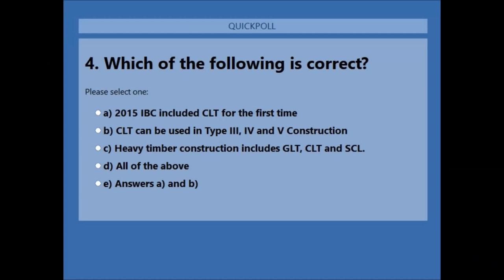Let's have a poll: which of the following is correct? A: 2015 IBC included CLT for the first time. B: CLT can be used in Type 3, 4, and 5 construction. C: Heavy timber construction includes GLT, CLT, and SCL. D: All of the above. E: Answers A and B only.